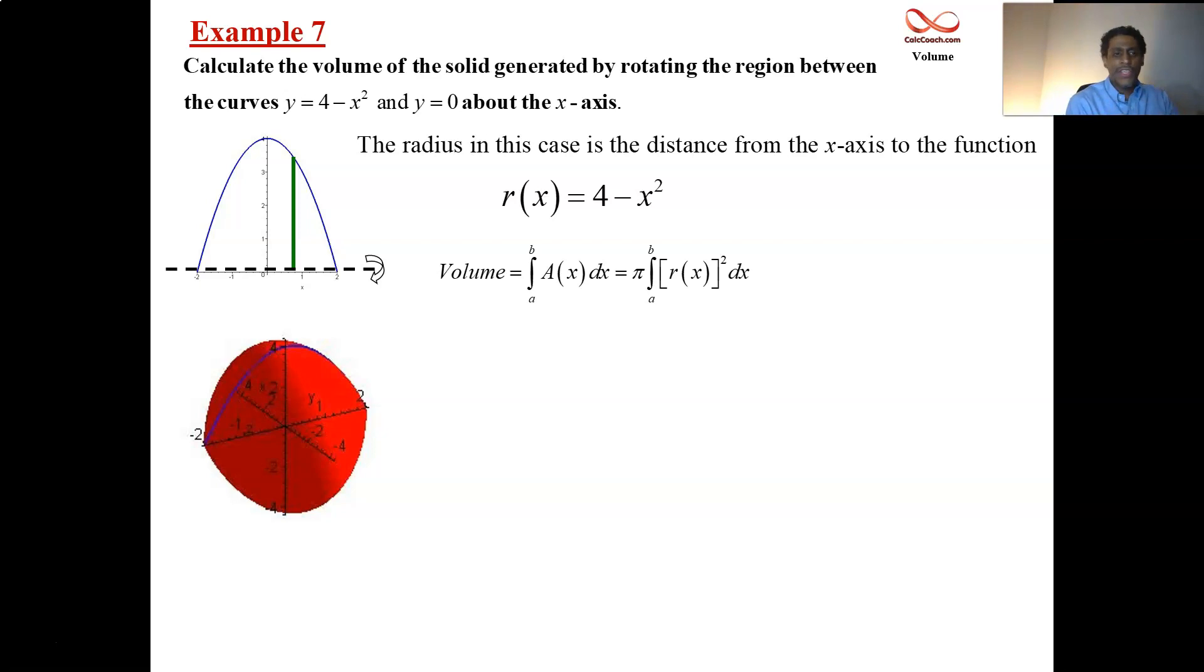What's the lowest x that you encounter? What's the highest x that you encounter? Where these guys are equal to each other. Where y equals 4 minus x squared is the same as y equals 0. Set those equal to each other. You'll see plus or minus 2. So you have your bounds. You have everything you need.